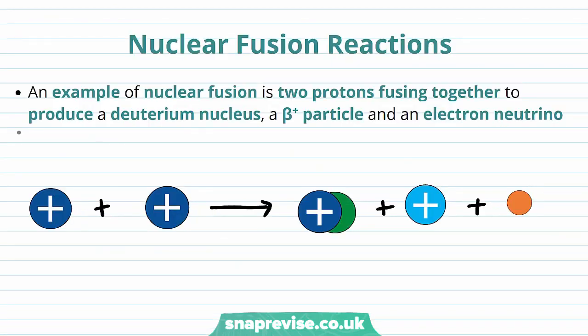Now that we've learned about the conditions for nuclear fusion, we can look at some nuclear fusion reactions. An example is two protons fusing together to produce a deuterium nucleus, a beta plus particle, and an electron neutrino.